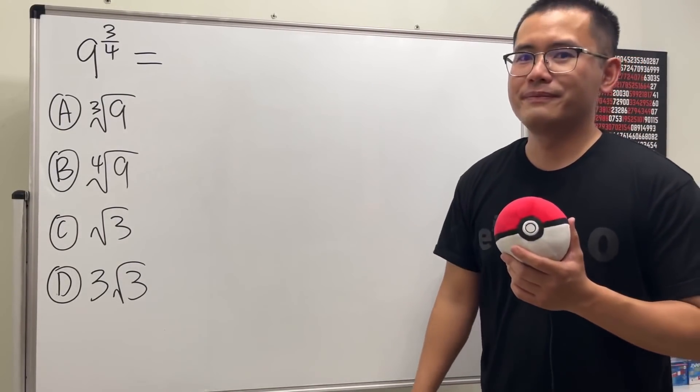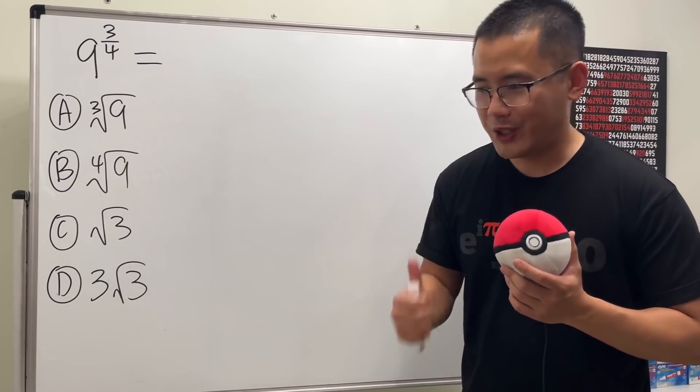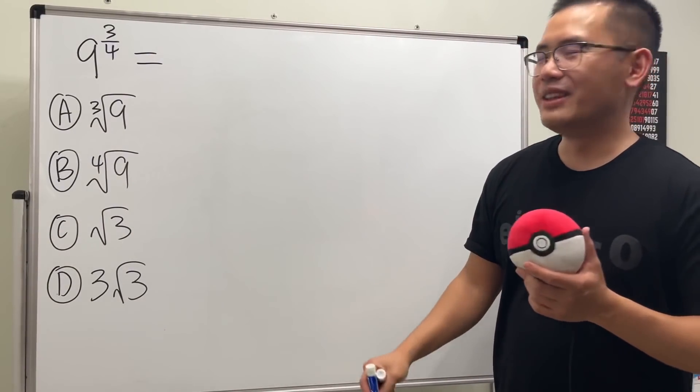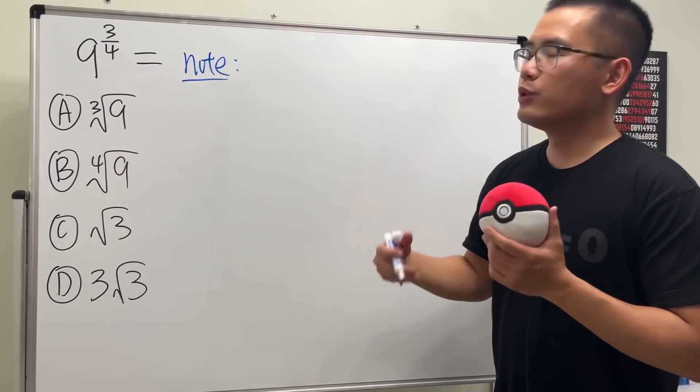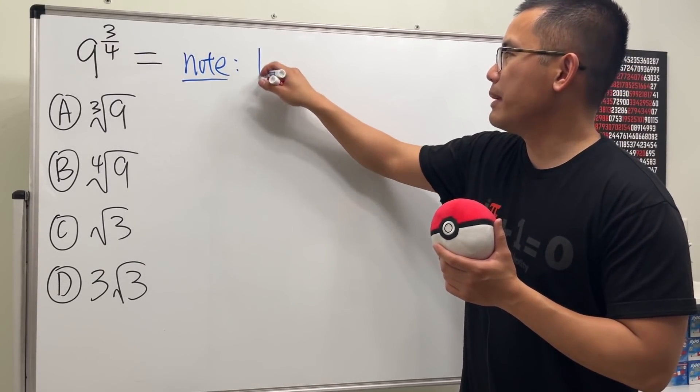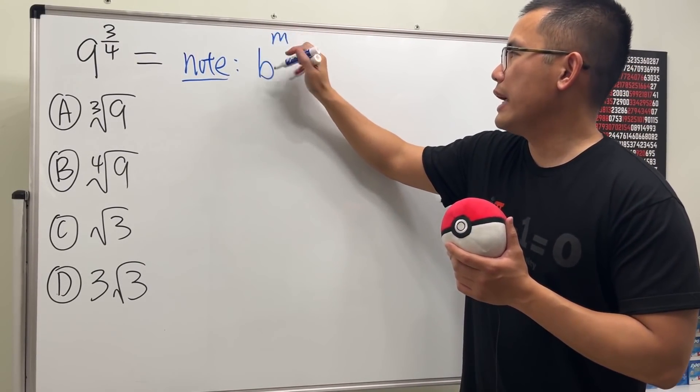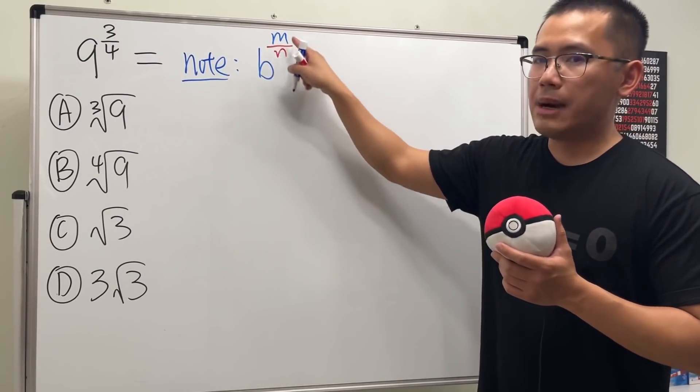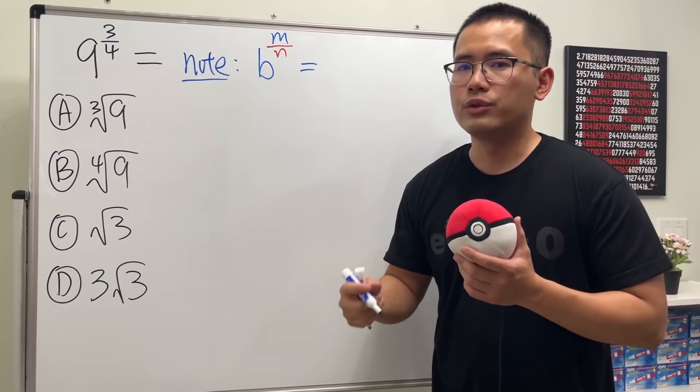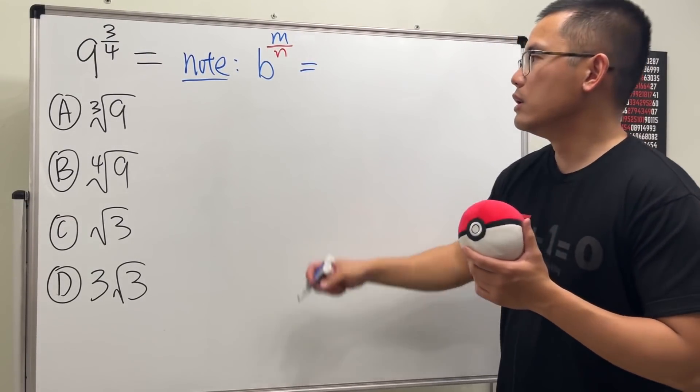But right here we'll do it legitimately. And of course, please pause the video and try first. Done? Good. Well, I will tell you guys the note on the side right here first. When we have to simplify a rational exponent, let's say we have the basis b and then raise to m over n's power, pay attention to the denominator here because that's going to change to the index of the radical.